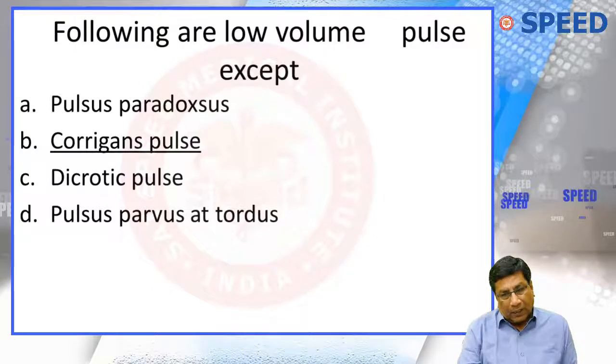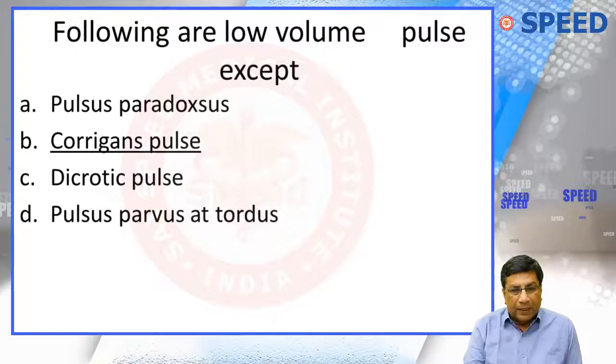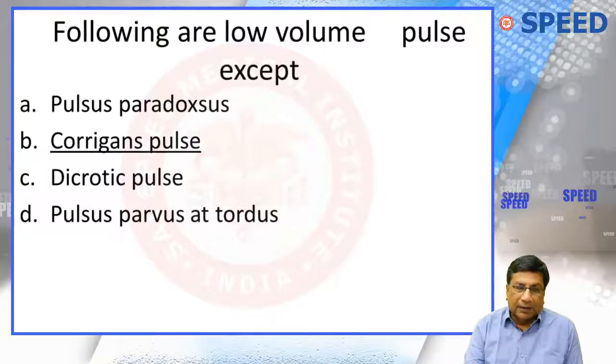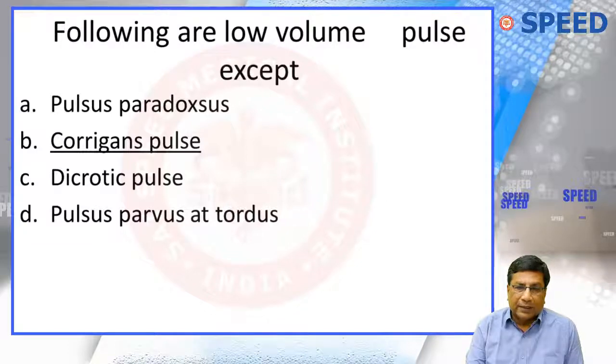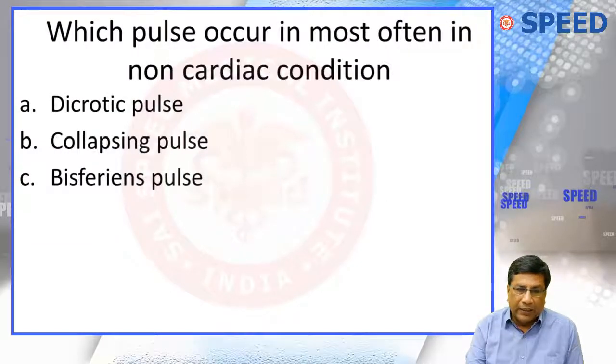To confirm a low volume pulse, you have to check the pulse pressure. If the pulse pressure is less than 30, it is a low volume pulse. If the pulse pressure is more than 50, it is a high volume pulse.